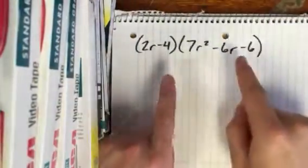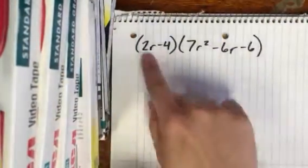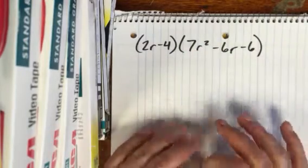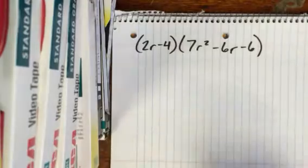Okay, so we're looking at multiplying polynomials. You got 2r minus 4 times 7r squared minus 6r minus 6. So pause the video, try to work it, and then we'll work it together.